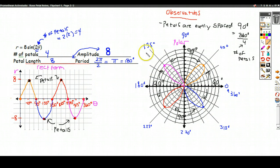Now, I'm going to show you how to use these observations to make a nice, quick rose petal graph without having to resketch the entire rectangular form of the equation.